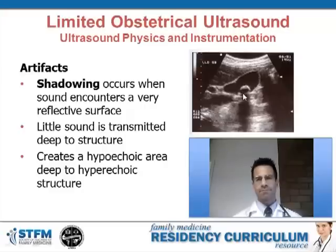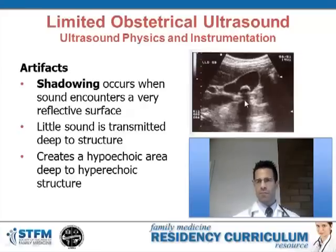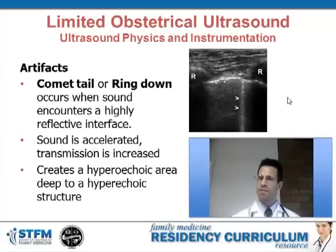Shadowing can be seen here — this is a gallbladder, and this is a gallstone. Shadowing occurs when sound hits a very reflective surface; there is little sound transmitted through the stone. So below or deep to the stone, there is very little sound that propagates, and that area below appears hypoechoic compared to surrounding tissue.